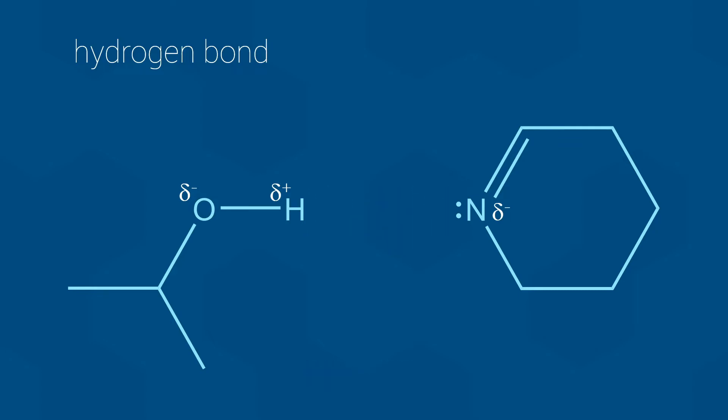However, hydrogen bonds have certain required features that are not shared by all permanent dipole based interactions. The first required feature is that each molecule needs an atom with a higher electronegativity and a partial negative charge. Admittedly that part isn't really different from other permanent dipole to permanent dipole interactions.